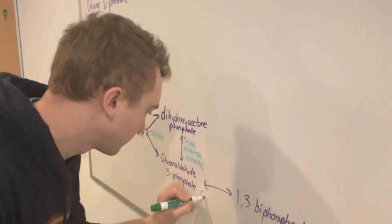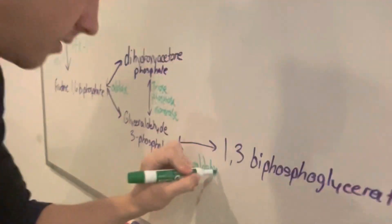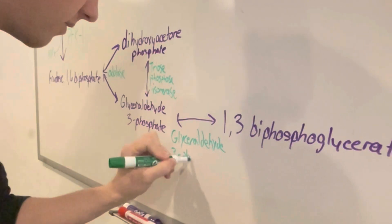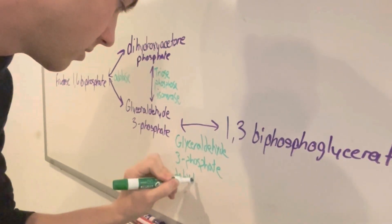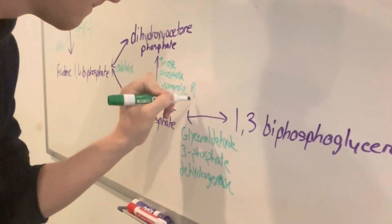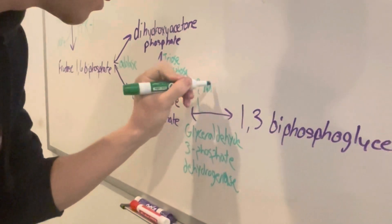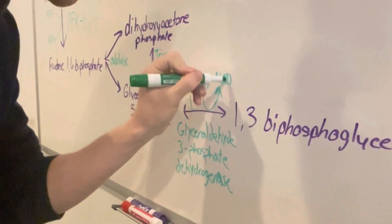This reaction is catalyzed by an enzyme by the name of glyceraldehyde-3-phosphate dehydrogenase. And this is combined by the addition of inorganic phosphate plus NAD+ to produce the byproduct of NADH plus a hydrogen ion.